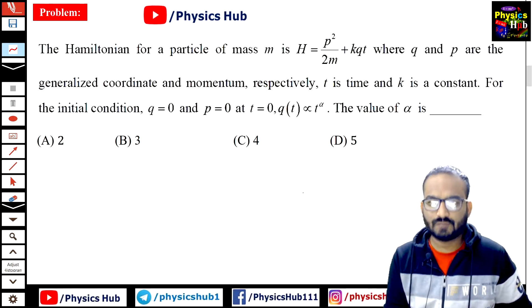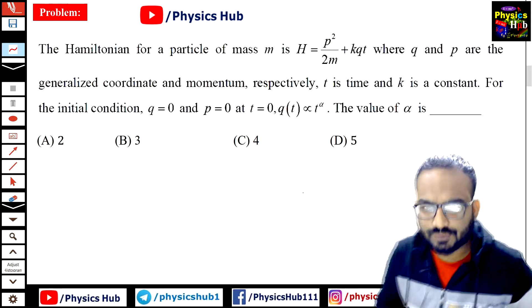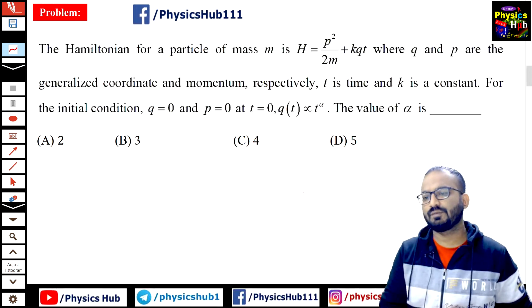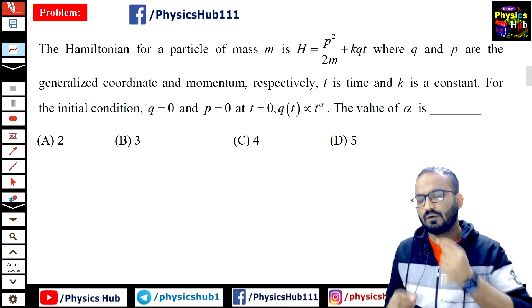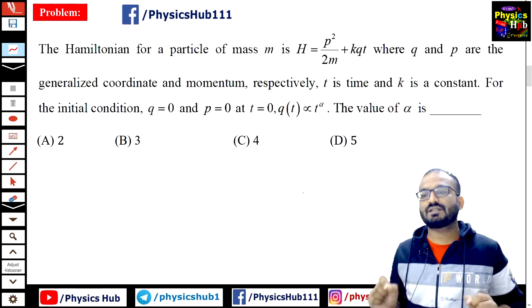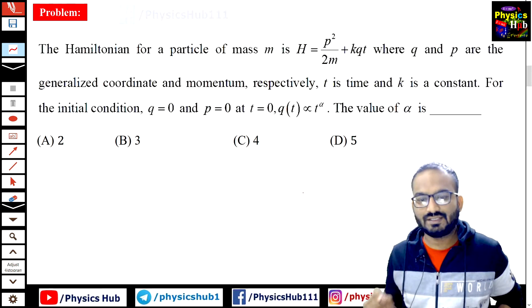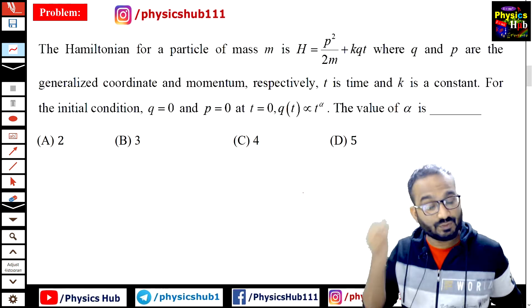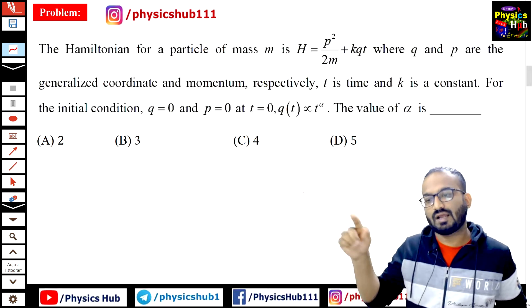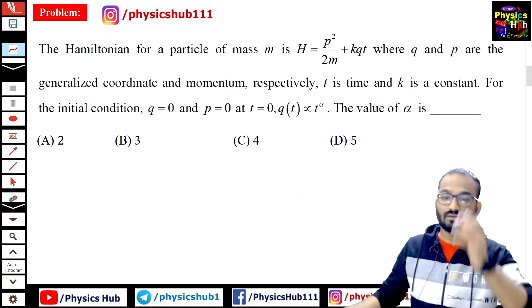Okay, so today we have a problem from classical mechanics. The Hamiltonian for a particle of mass m is H equals p squared by 2m plus k into q into t, where q and p are the generalized coordinate and momentum respectively. t is the time and k is a constant. For the initial condition q equals 0 and p equals 0 at t equals 0, q of t has been found proportional to t to the power alpha. What will be the value of alpha?